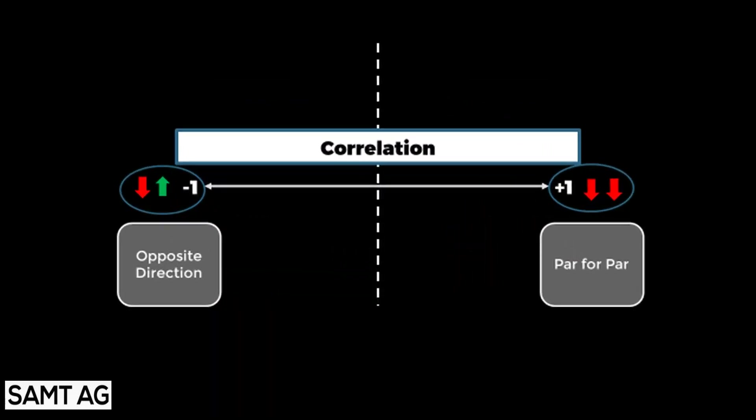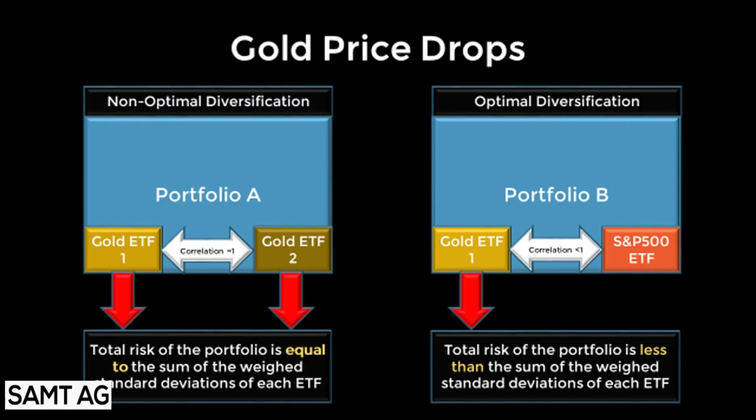Correlation is measured on a scale of minus 1 to plus 1. Plus 1 indicates positive correlation, where prices of two assets move par for par, while minus 1 shows negative correlation — prices move in opposite directions. If you put two assets with a correlation of plus 1 in a portfolio, the risk they bring will be the sum of the weighted risk of individual assets. But if you put a pair of assets with correlation less than 1, the risk of the resulting portfolio will be less than the sum of the weighted risk of individual assets.